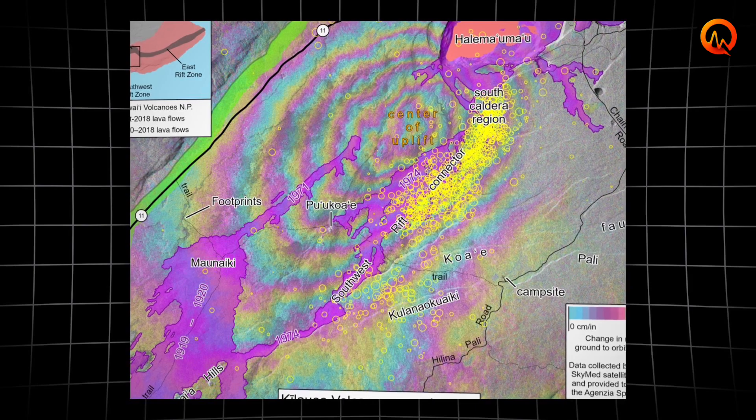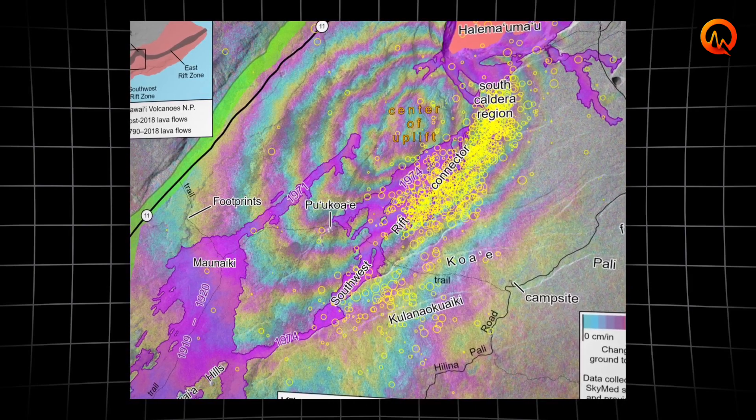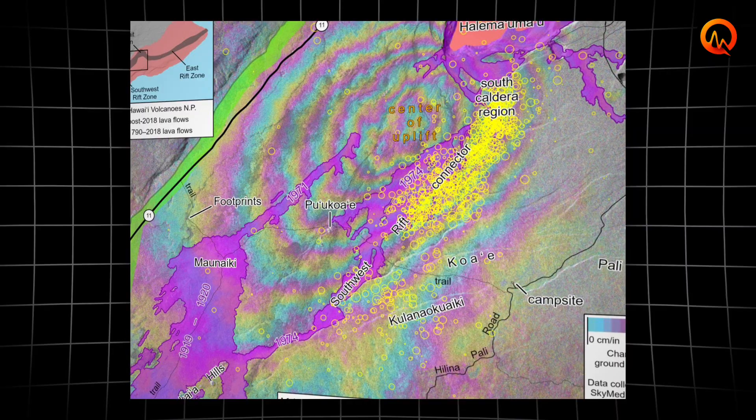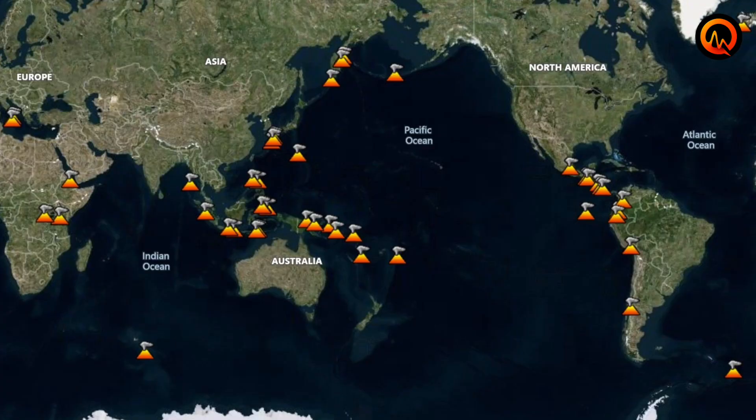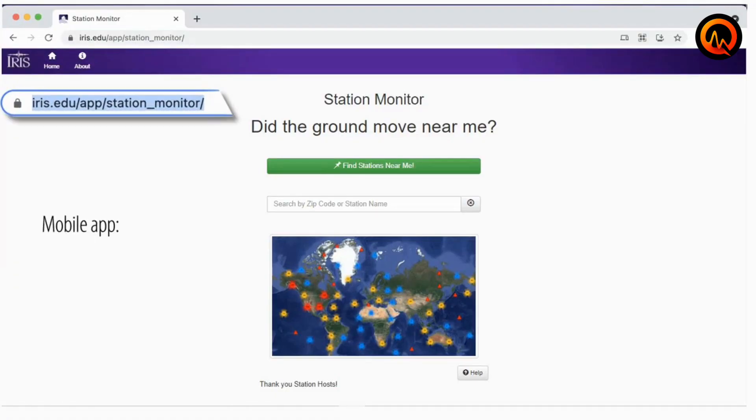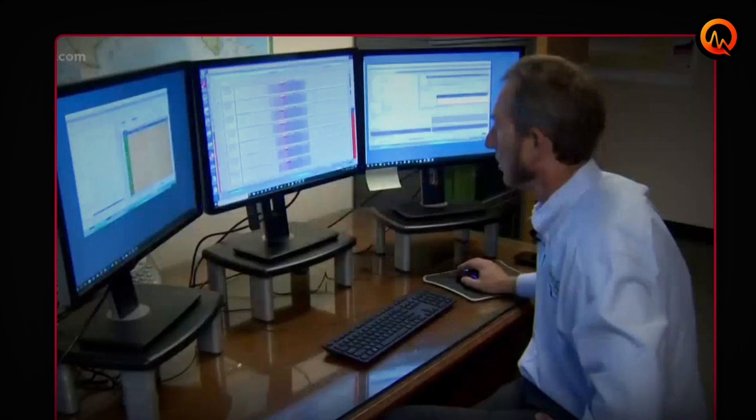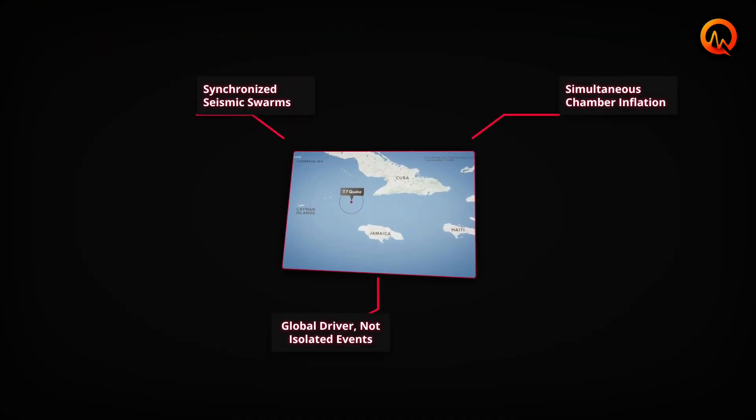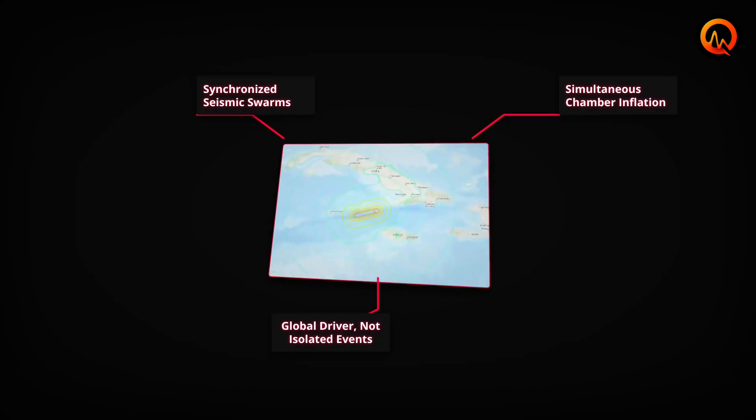Ground deformation measurements from satellite interferometry reveal that magma chambers beneath several of these volcanoes began inflating during the same two-week period in early November. This suggests a common triggering mechanism, rather than coincidental local geological processes. The Global Seismic Network has detected low-frequency tremors characteristic of magma movement, occurring simultaneously across multiple volcanic regions.